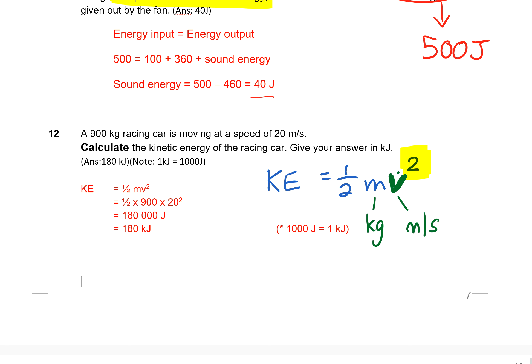So for question 12, the mass is 900, the speed is 20, and then 20 squared. So 20 times 20. Press your calculator carefully and you should get 180,000 joules. Do note that every 1,000 is 1 kilojoule, so 180,000 joules is 180 kilojoules. So each time you do a conversion, all you need to remember is every time you see three zeros here, you can replace it with a kilo. So for example, you have 25,000 joules of energy. These three zeros, you replace it with kilo, so it will be 25 kilojoules. That's how you can do conversion quite easily.